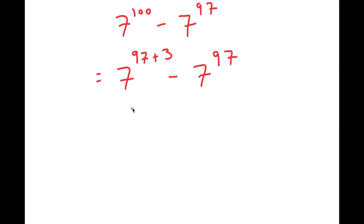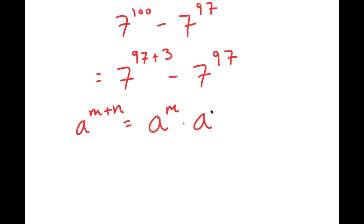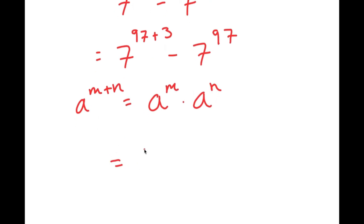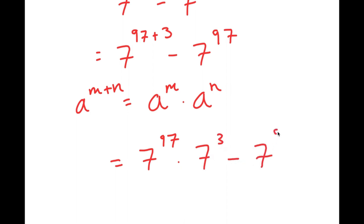Now, if I have something in the form a to the power of m plus n, this is equal to a to the power of m times a to the power of n. So 7 to the power of 97 plus 3 is going to equal 7 to the power of 97 times 7 to the power of 3, and I have this minus 7 to the power of 97.